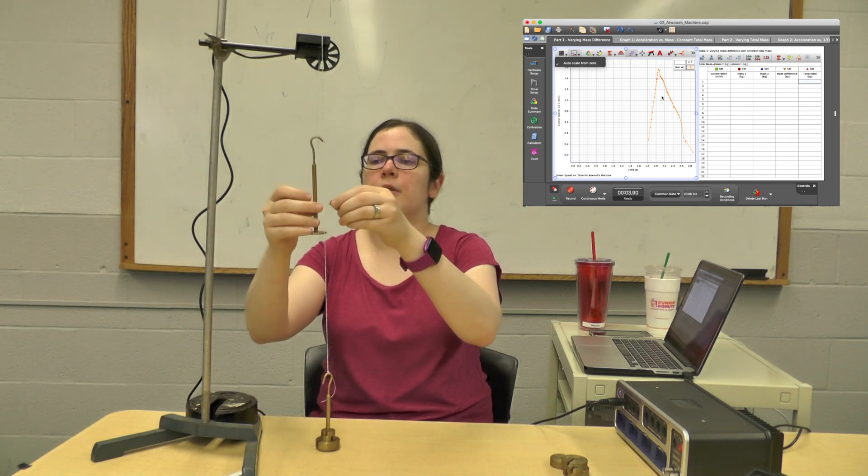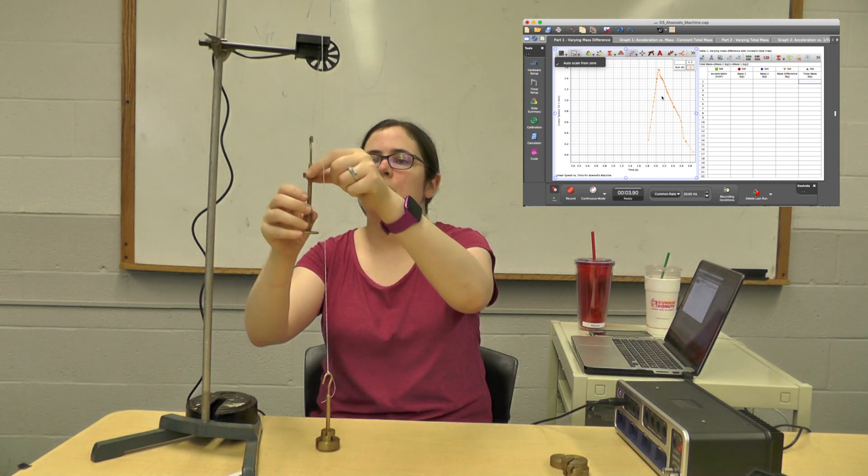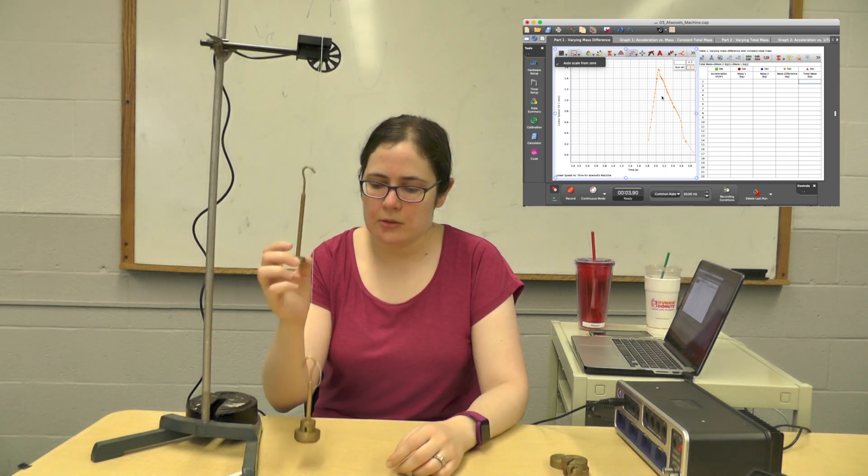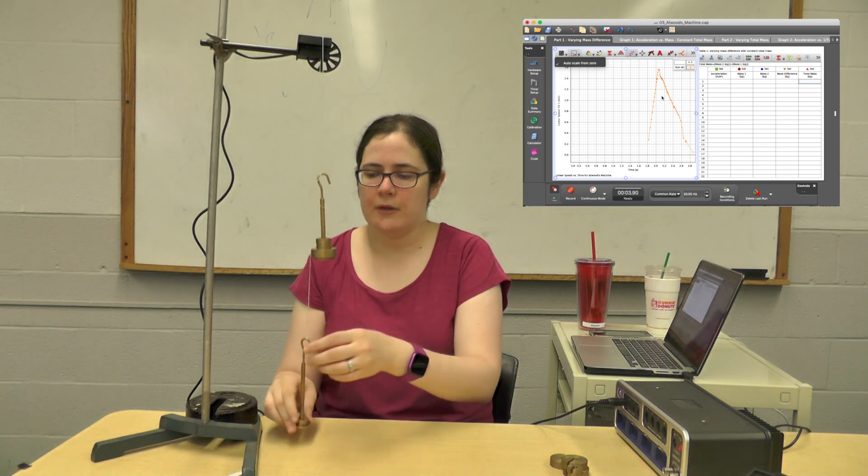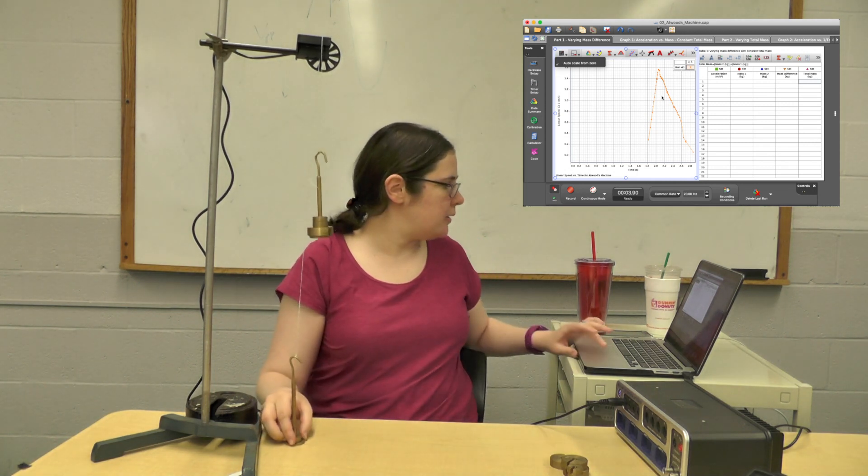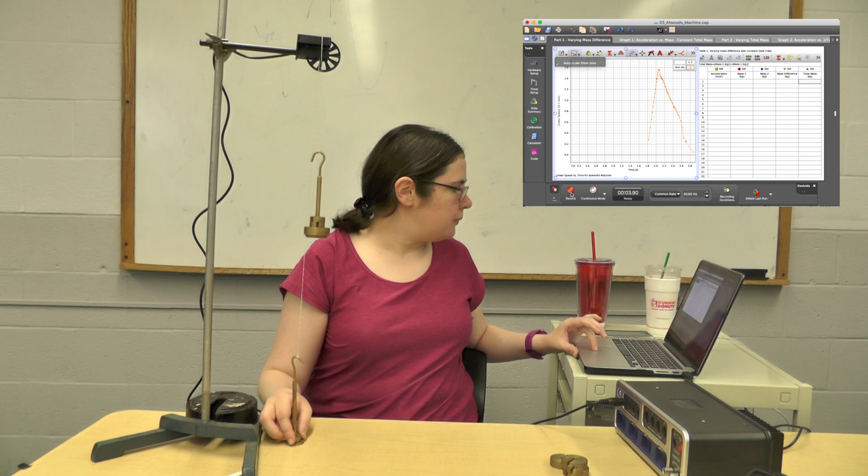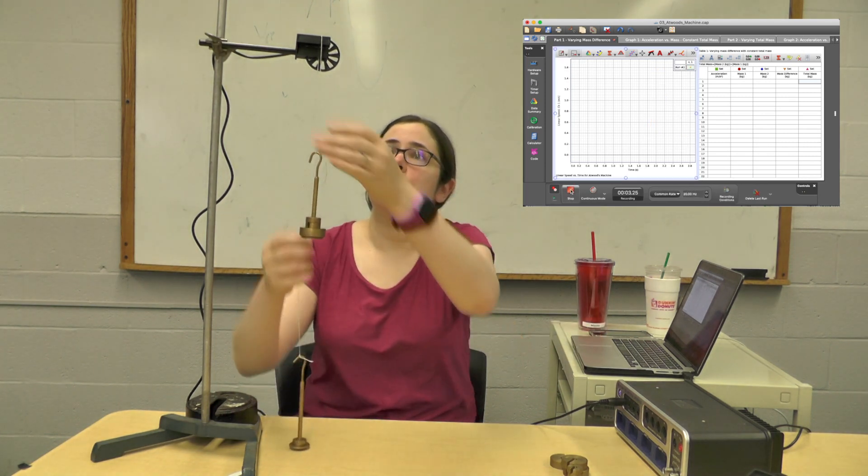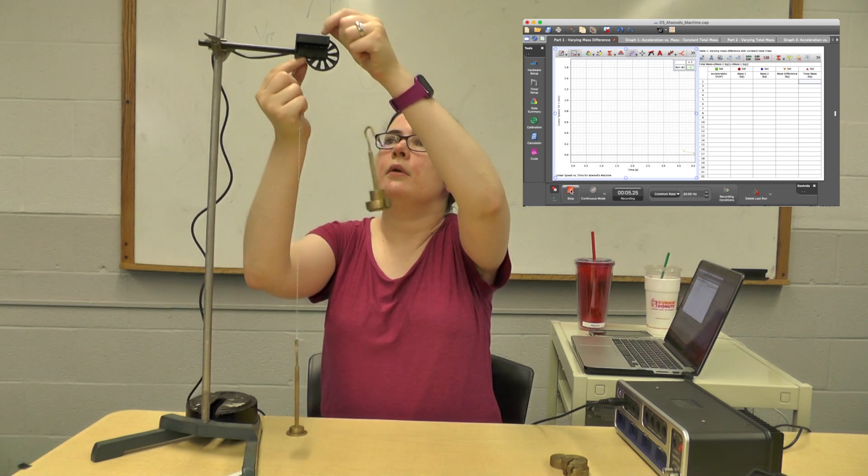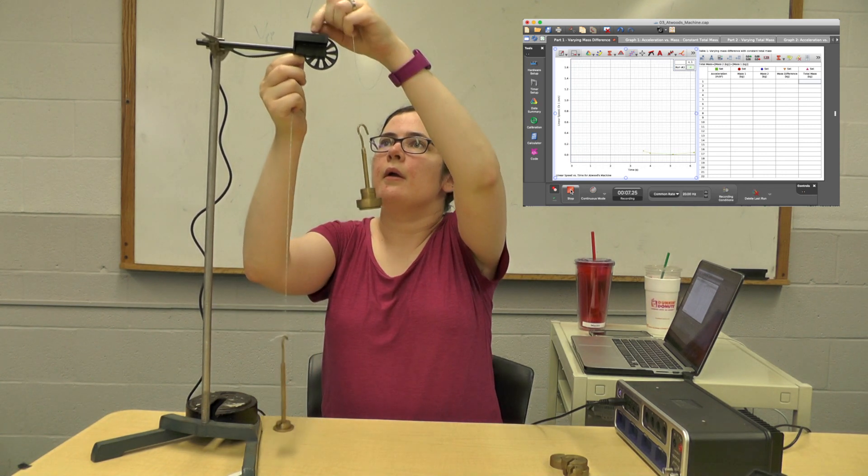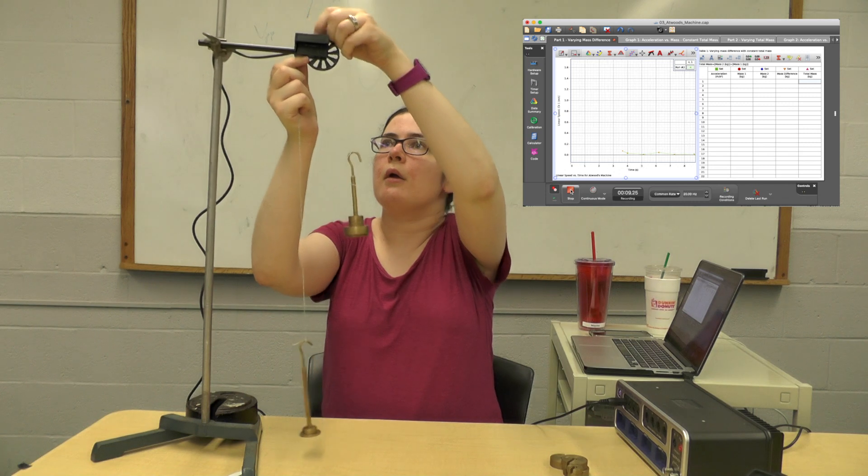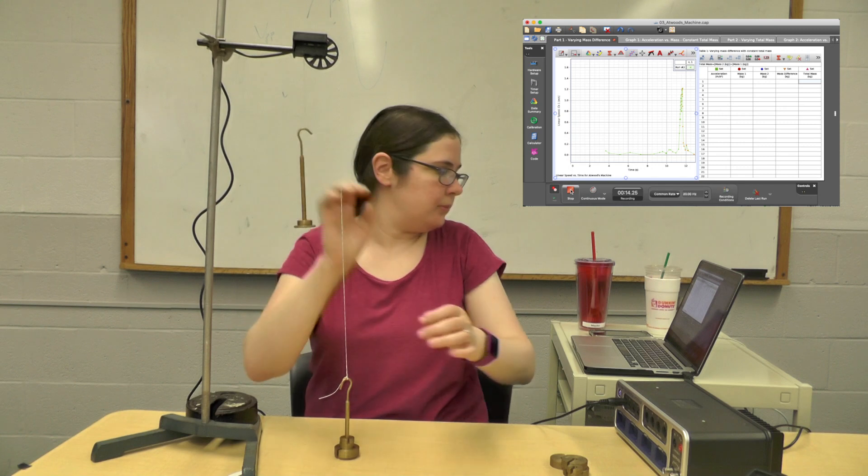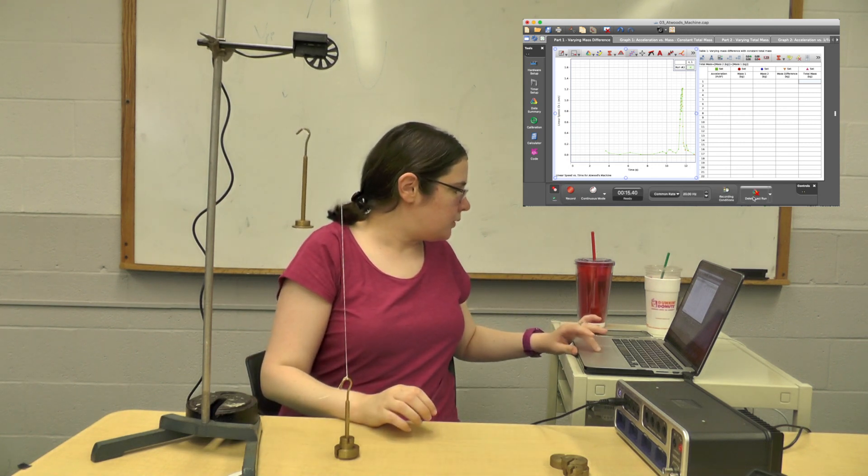Okay, so that was run one where there's nothing on the lighter mass. Here I'm going to add 20 grams to the lighter mass and we'll see what happens. So I've taken 20 grams off of the heavy mass and I've added it to the lighter mass. And it's run two and it got stuck. Oh, they hit each other.